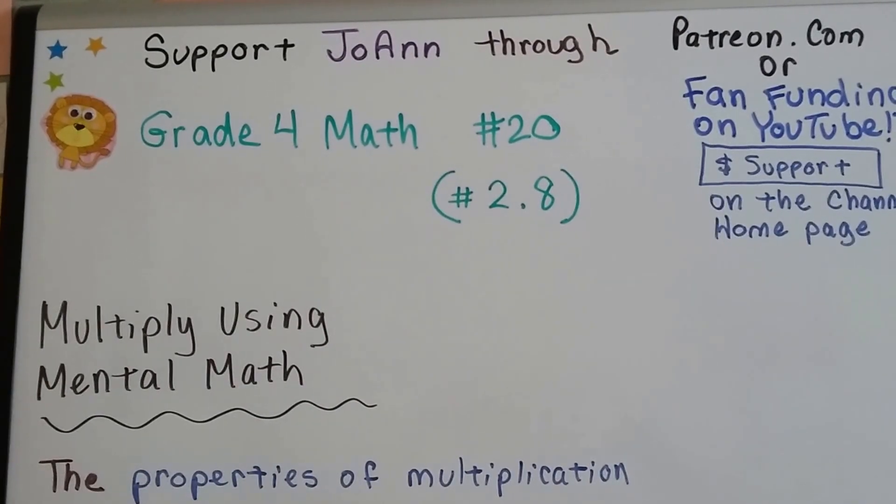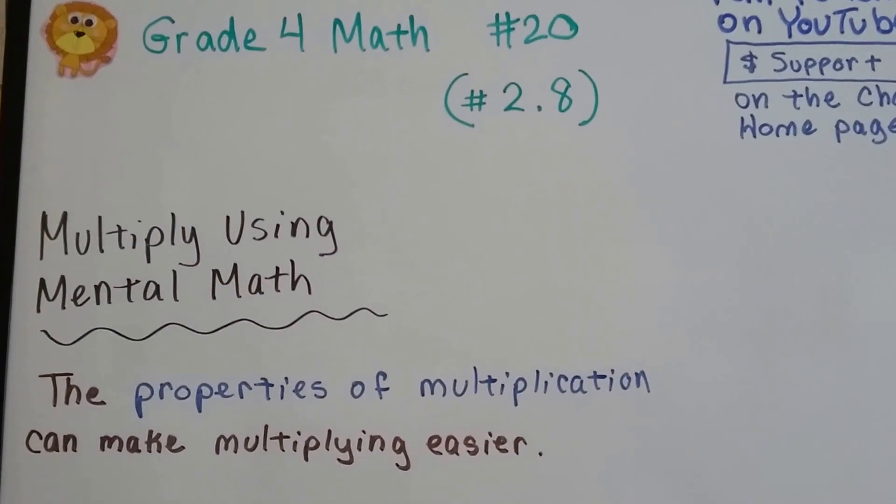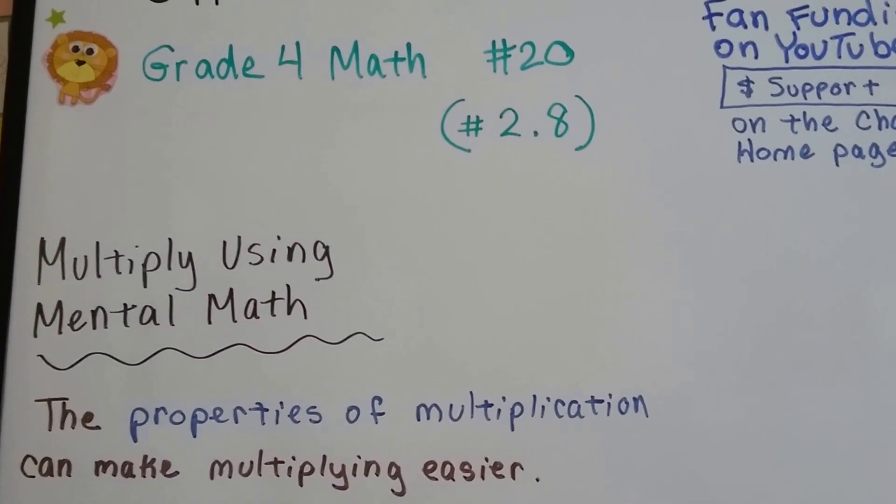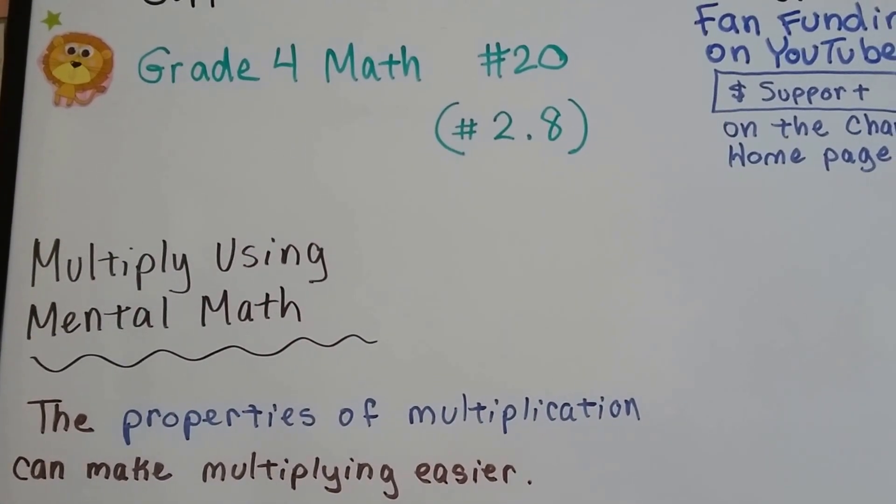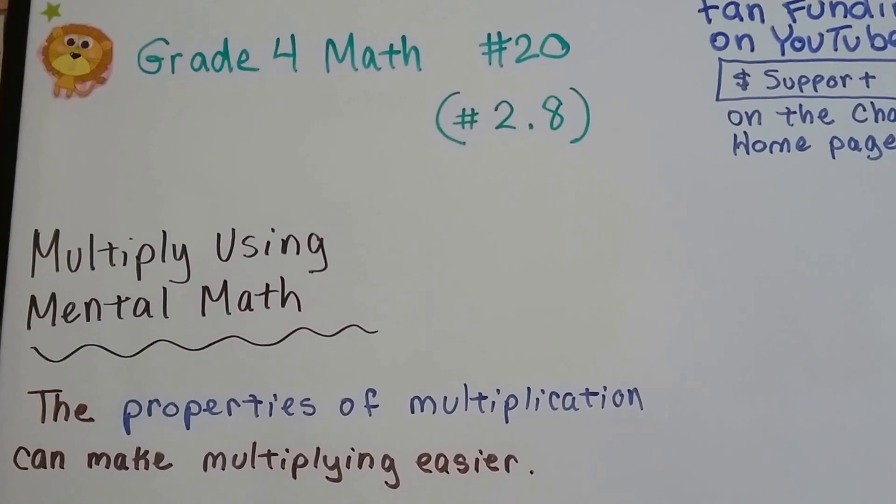Grade 4 math, number 20. This is also 2.8 in your GoMath textbooks. We're going to multiply using mental math. I want to give a shout out to Lorenzo and thank him. In my old version of this video from March 2016, I had a math mistake and he pointed it out to me.